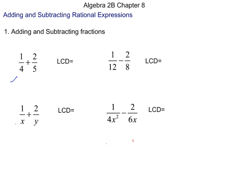If we want to add 1 fourth and 2 fifths, you always have to find the least common denominator. The easiest one is to just multiply the two denominators. In this case, that is the least common denominator, which is 20.